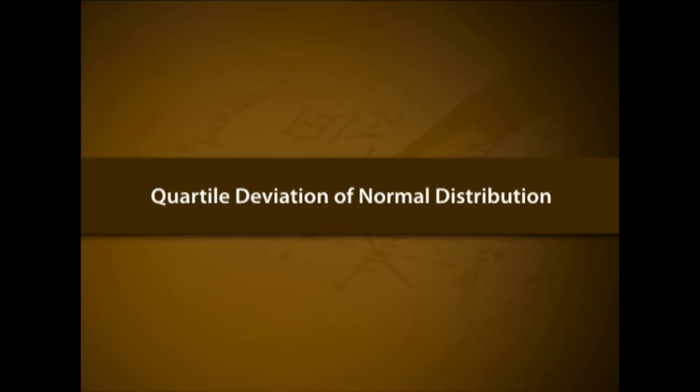The standard normal curve is symmetric about μ equal to 0. Hence, the areas under the standard normal curve from 0 to infinity and from minus infinity to 0 are 0.5 each. A table showing the area under the standard normal curve from 0 to z is available for different values of z. And quartile deviation of normal distribution.